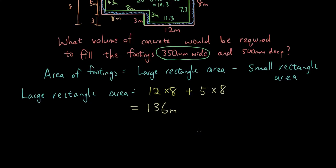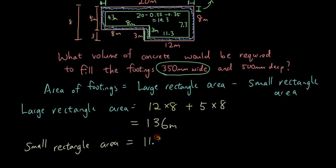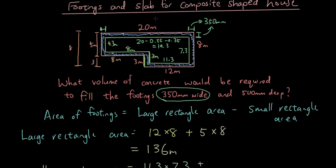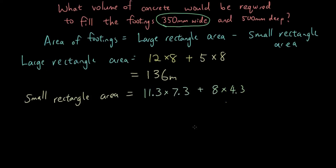And then let's do the small rectangle area. So the small rectangle area is again made up of two sections. So we've got the rectangle on the right over here. And that is calculated from 11.3 times 7.3. So let's do that. 11.3 times 7.3. Plus this rectangle here which is made up of 8 times 4.3. And the answer is 116.89 meters squared.